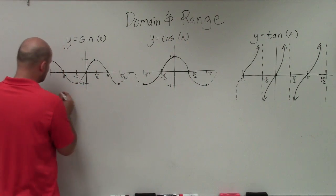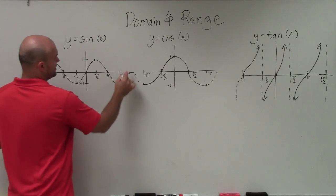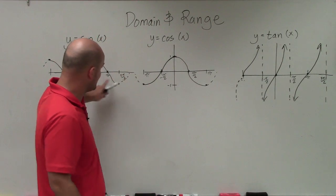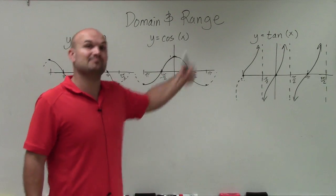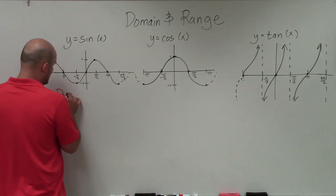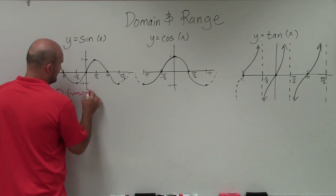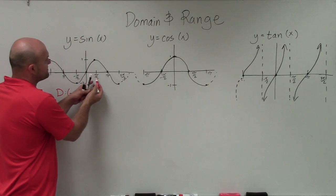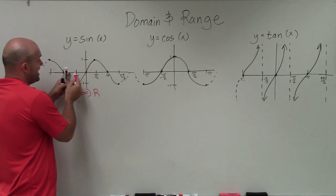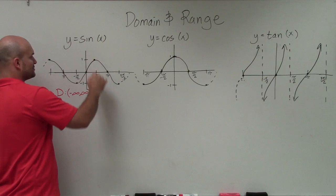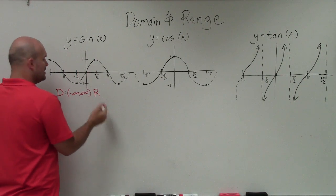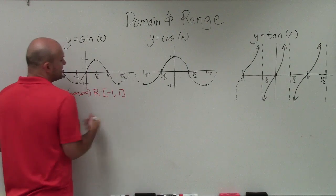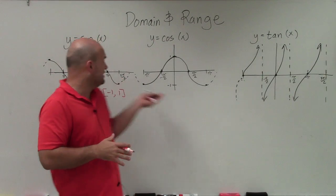Looking at the sine graph, we notice it continues indefinitely to the right and indefinitely to the left. That means every x-value along the x-axis will give us a y-value, so the domain is from negative infinity to infinity. The range is the output: plugging in π/2 gives 1, and plugging in negative π/2 gives negative 1. The graph never goes higher than 1 or lower than negative 1, so the range is the closed interval from negative 1 to positive 1.